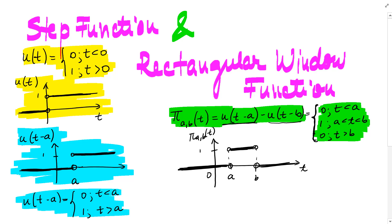To see why: for t less than a, both u of t minus a and u of t minus b are 0, so 0 minus 0 gives 0. For t between a and b, u of t minus a is 1 and u of t minus b is 0, so 1 minus 0 gives 1. For t greater than b, both are 1, so 1 minus 1 gives 0.